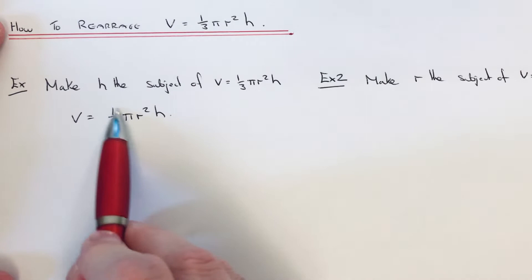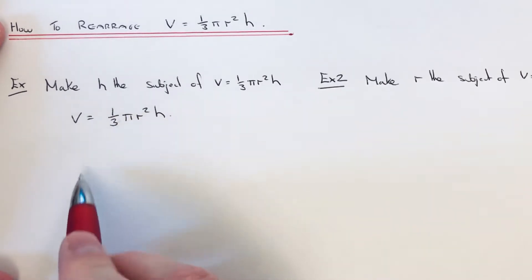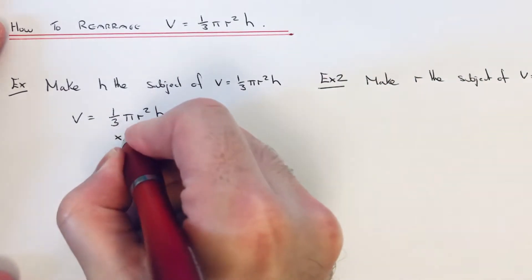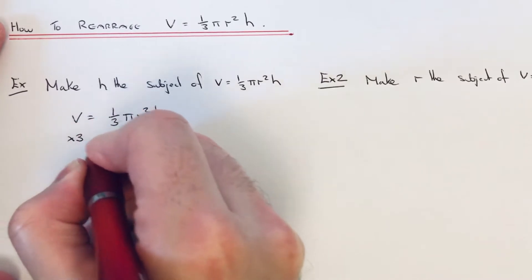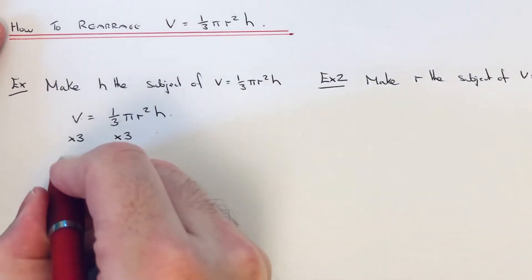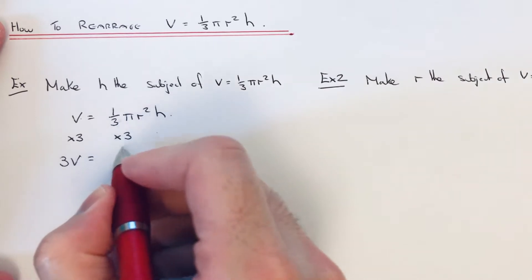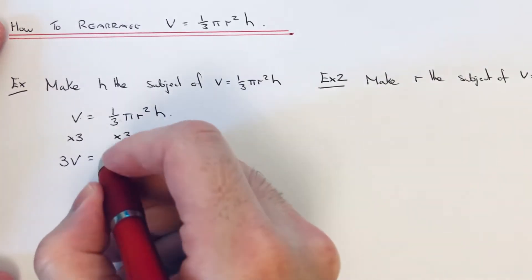The first thing we want to do is get rid of this fraction here, 1/3, and to do that I'm just going to times both sides by 3. So V times 3 is 3V, and that third will cancel out with the 3 to give πr²h.